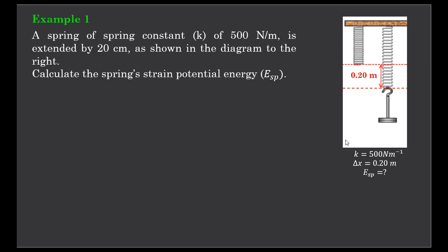So we've got three examples to look at in this video. First of all, example one. A spring of spring constant of 500 newtons per meter is extended by 20 centimeters as shown in the diagram to the right. Calculate the spring's strain potential energy.